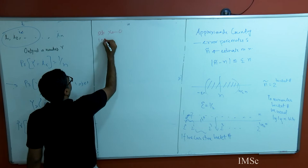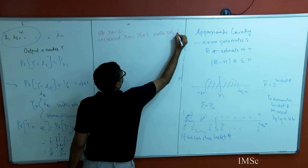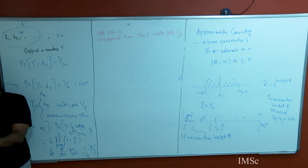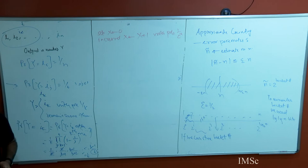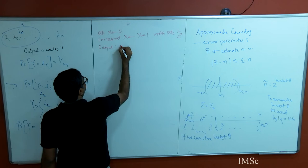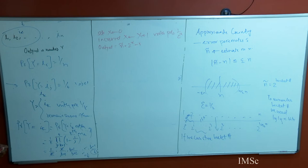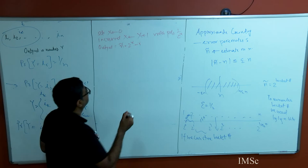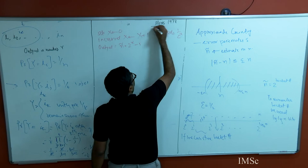Inspired by this, here is the algorithm: we set initially x equal to 0, and we increment x to x plus 1 with probability 1 over 2^x. What is the output? N-tilde is 2^x minus 1. This algorithm was given as far back as 1978 by someone called Morris. So this is what we will try to analyze and understand today — it is a randomized algorithm.